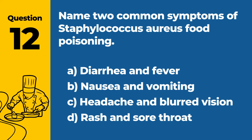Question 12: Name two common symptoms of Staphylococcus aureus food poisoning. A. Diarrhea and fever. B. Nausea and vomiting. C. Headache and blurred vision. D. Rash and sore throat. Answer: B. Nausea and vomiting. Two common symptoms of Staphylococcus aureus food poisoning are nausea and vomiting.